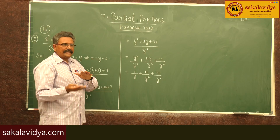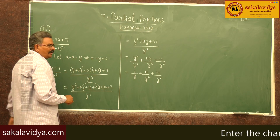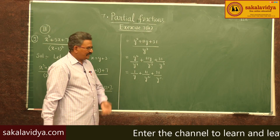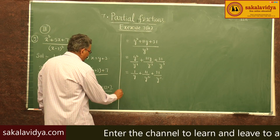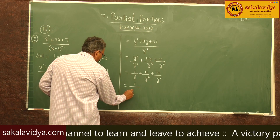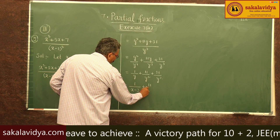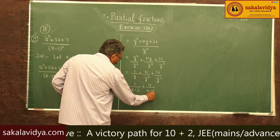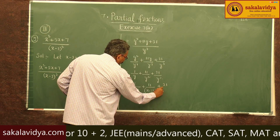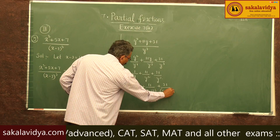Now let us replace y back with x minus 3 to get the required partial fractions. The result is: 1 over (x minus 3), plus 11 over (x minus 3) squared, plus 31 over (x minus 3) cubed.